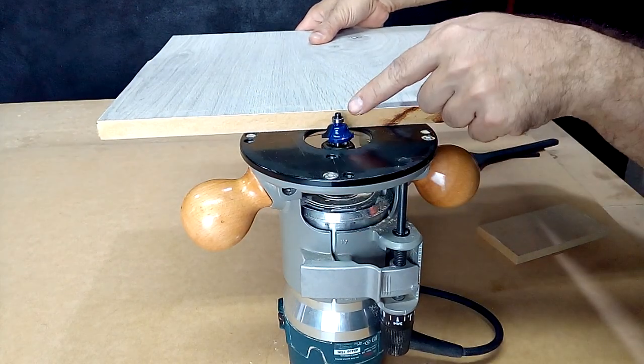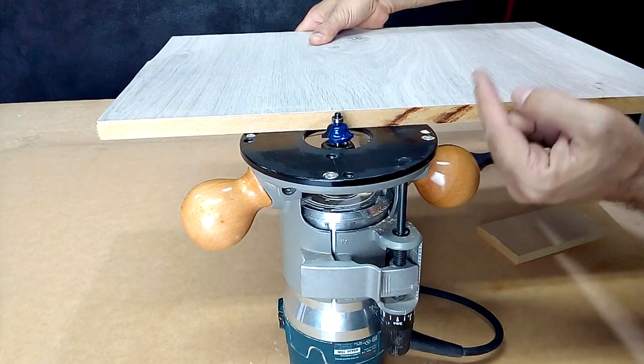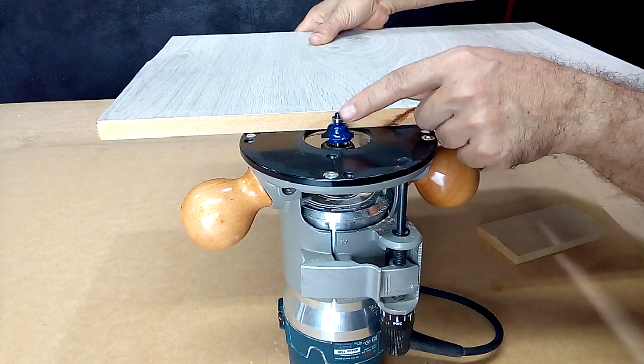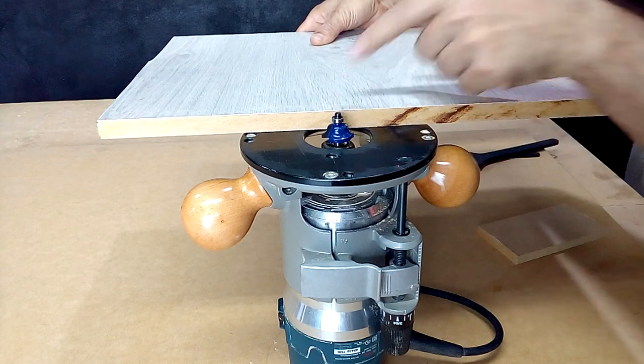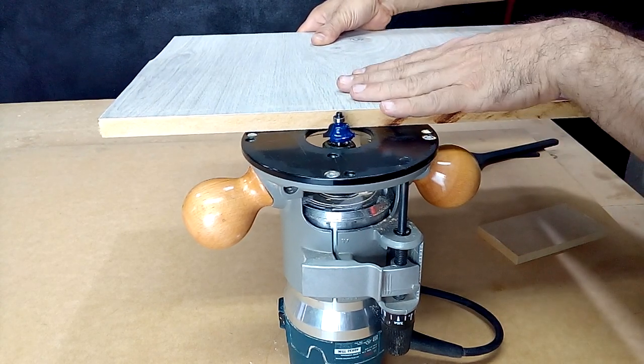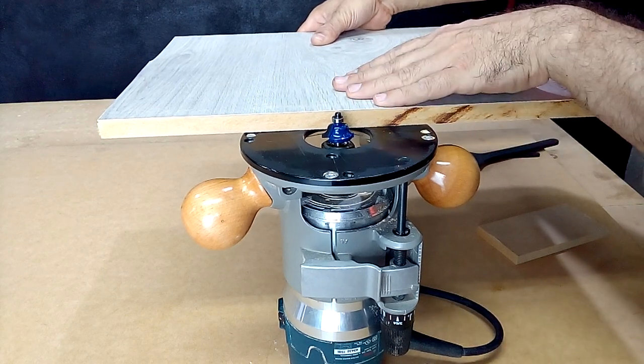We can place a piece of MDF on the base of the router to know the height and the shape of the milling. Here we can see that the bearing abuts the edge of the MDF board, to copy the shape of our board and only mill its edge.